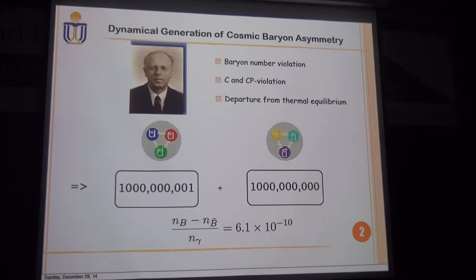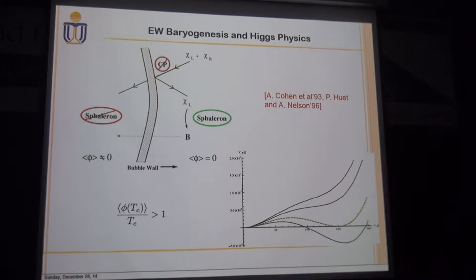Among these possibilities, electroweak baryogenesis is of particular interest because it has a strong correlation with Higgs physics, which enables it to potentially be testable at colliders. Electroweak baryogenesis requires the electroweak phase transition to be first order and to be realized via bubble nucleation in the early universe.